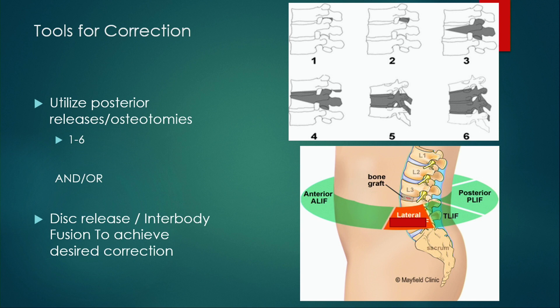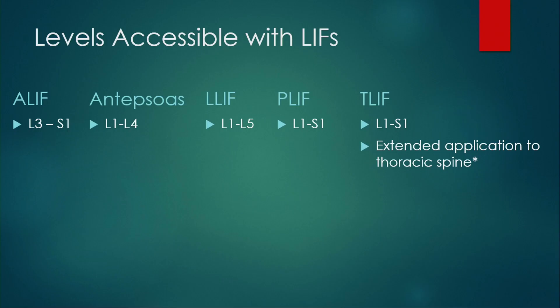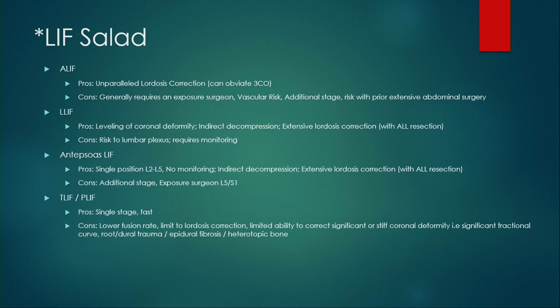In terms of tools for correction, Schwab gave us a classification of six grades of posterior-based osteotomies, and we have a variety of approaches to the intervertebral disc anteriorly. We are fortunate to have excellent access surgeons at UCSF. We have lateral approaches, antisoas approaches, TLIF and PLIF. An ALIF generally gets us from L3 to S1, antisoas from L1 to L4, a transpsoas approach from L1 to L5, and PLIF and TLIF can be used throughout the lumbar and thoracic spine.